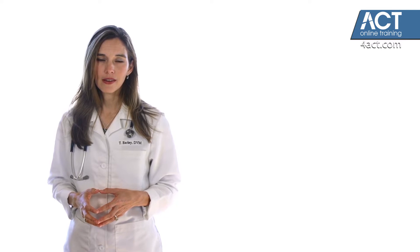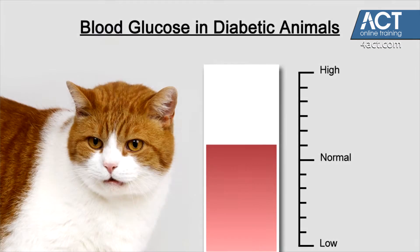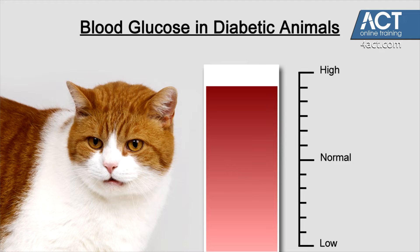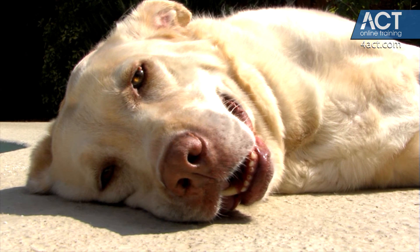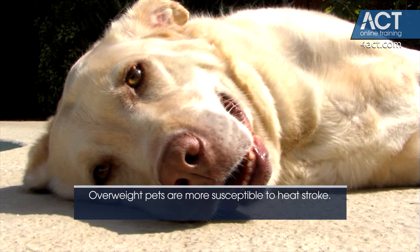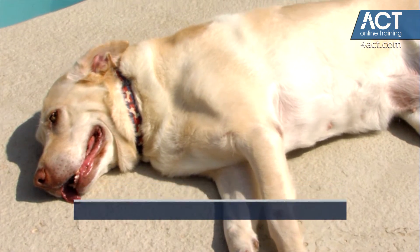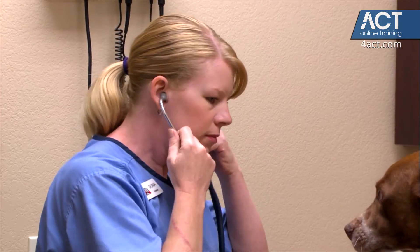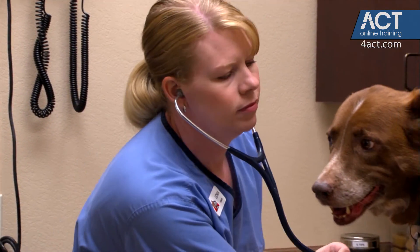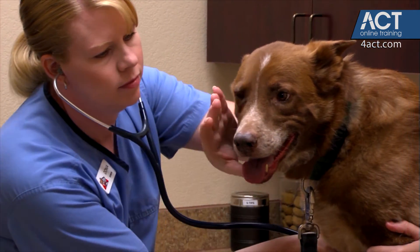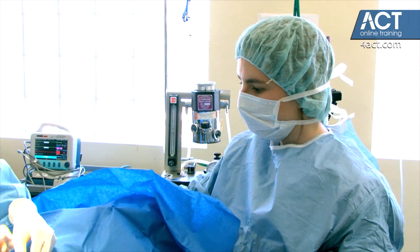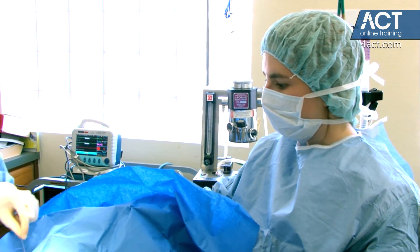Other obesity-related problems are less obvious, but equally as devastating. Excess body fat can contribute to developing diabetes mellitus, a serious disease that causes blood glucose levels to soar uncontrollably, leading to all sorts of ill effects. Overweight animals are more susceptible to heat stroke because dogs and cats do not sweat to cool themselves, and the fat acts as an insulating blanket all over the body. Respiratory problems and heart disease are caused and complicated by obesity as well, and overweight animals are also at increased risk of complications during anesthetic and surgical procedures.